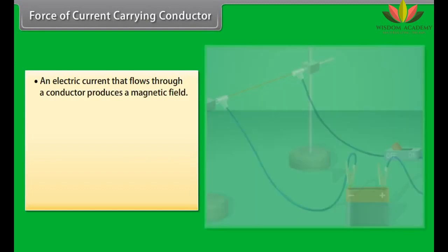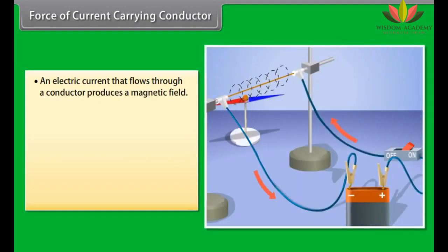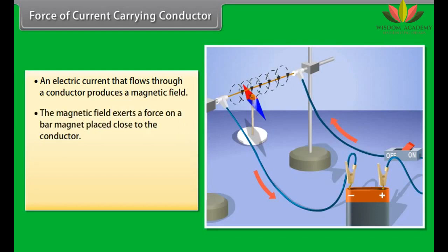Force of current carrying conductor. We have seen that an electric current that flows through a conductor produces a magnetic field. The magnetic field so produced exerts a force on a bar magnet placed close to the conductor. French scientist André-Marie Ampere, 1775 to 1836, discovered that the bar magnet would also exert an equal and opposite force on the conductor.